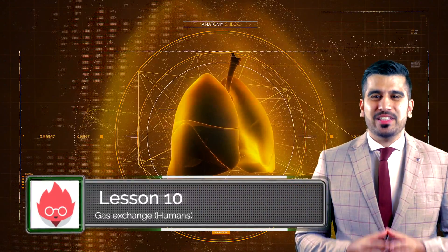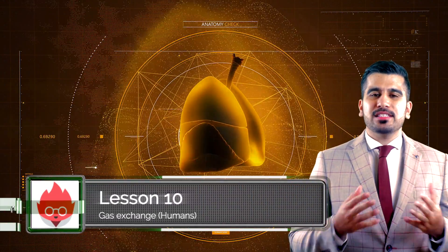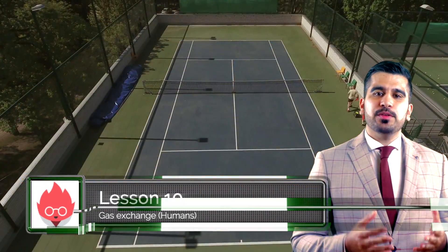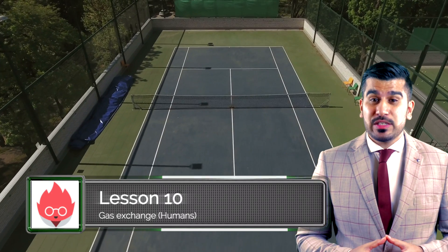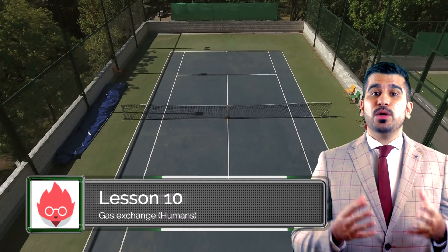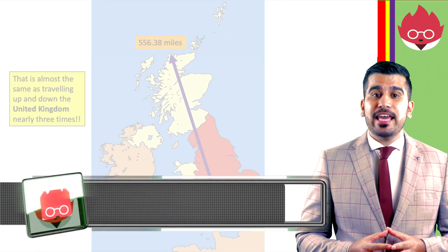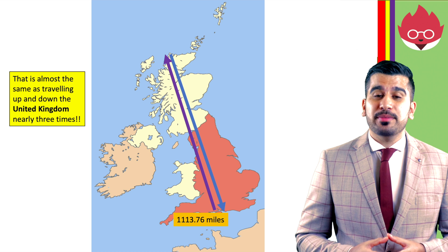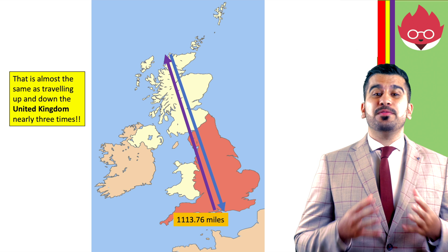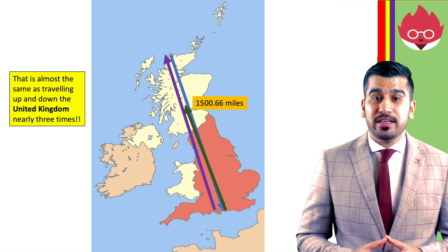Did you know your lungs are one of the largest organs in your body? The surface area of both the lungs is roughly the same size as a tennis court, and the total length of the airways running through them is approximately 1,500 miles.